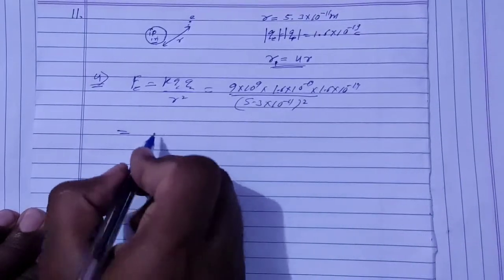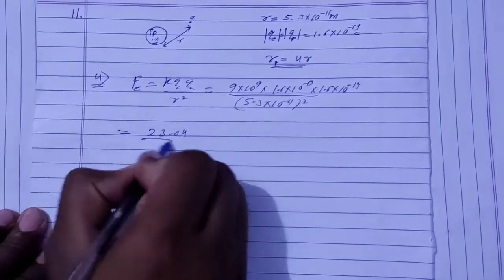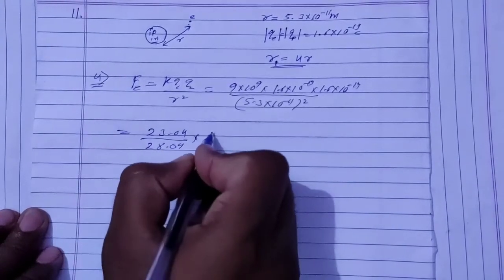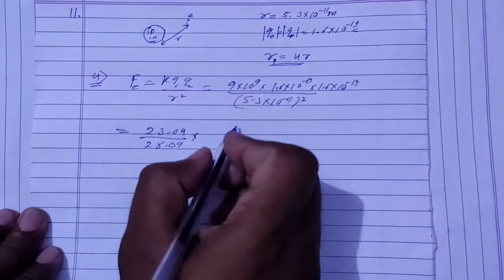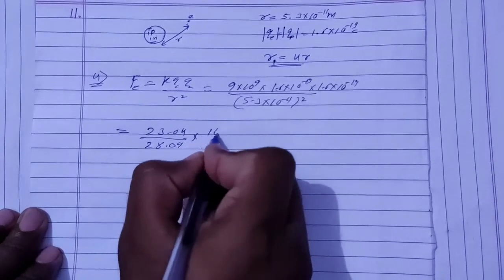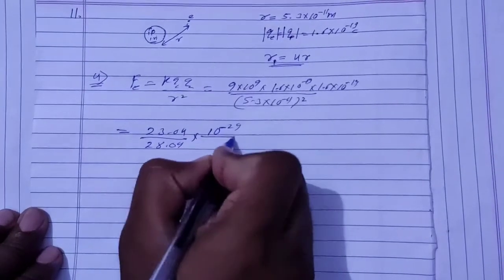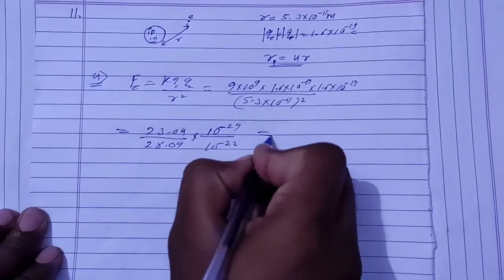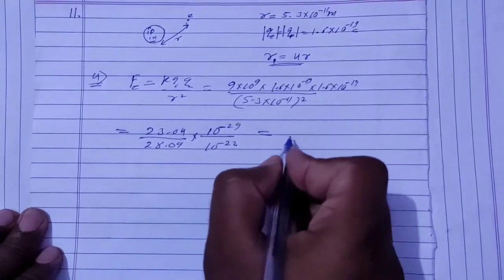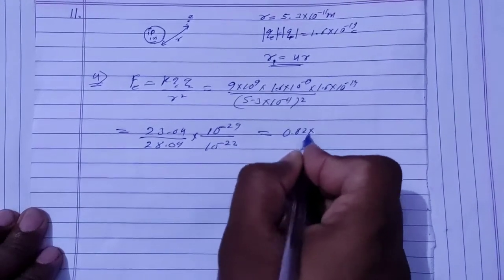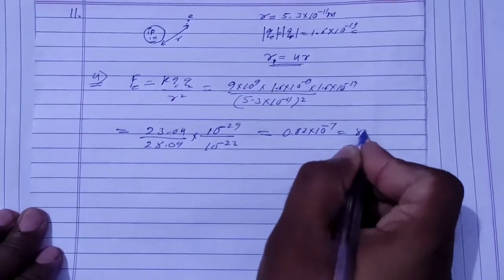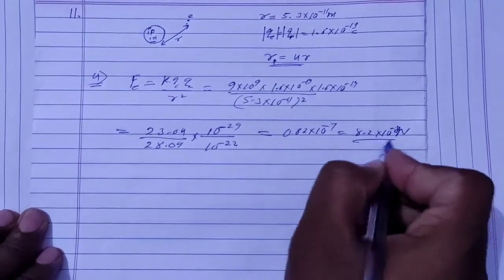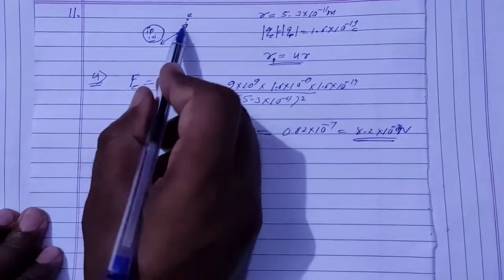Calculating: numerator is 9×10⁹ × (1.6×10⁻¹⁹)² = 23.04×10⁻²⁹, and the denominator is (5.3×10⁻¹¹)² = 28.09×10⁻²², giving 23.04/28.09 ≈ 0.82×10⁻⁷, which equals 8.2×10⁻⁸ newtons. This is the Coulomb force in the ground state, F1 = 8.2×10⁻⁸ N.